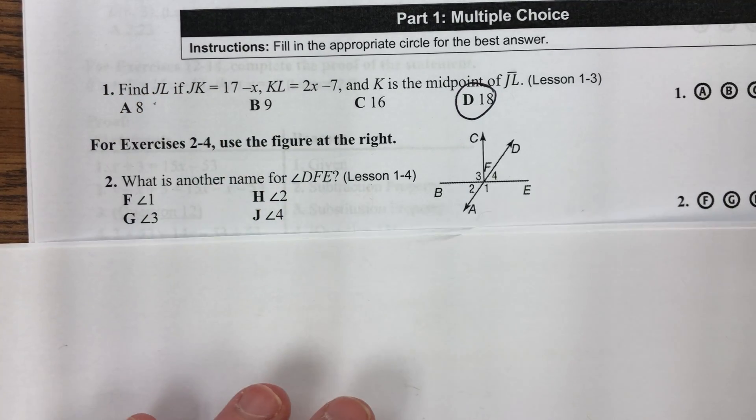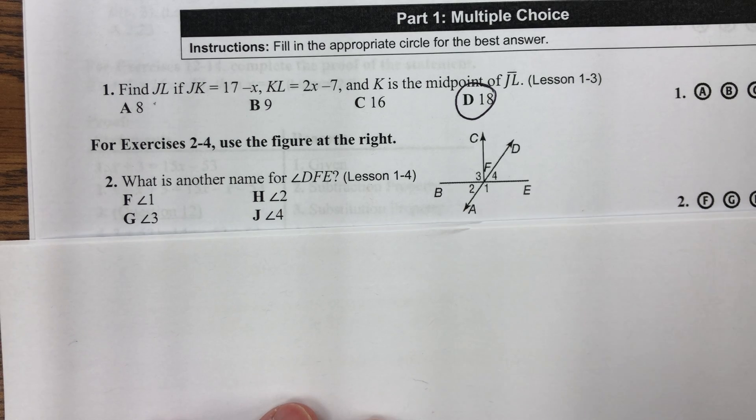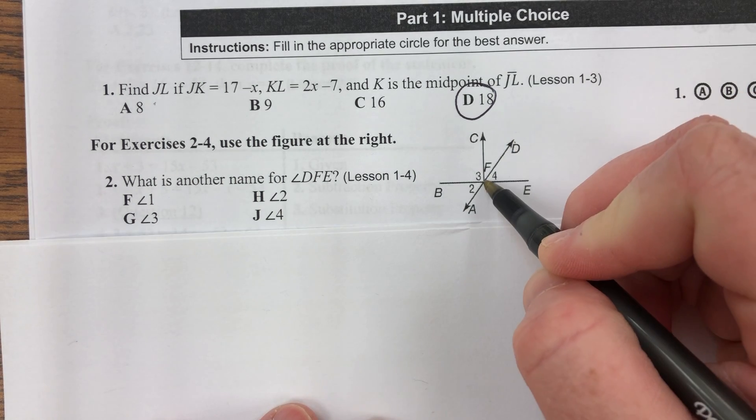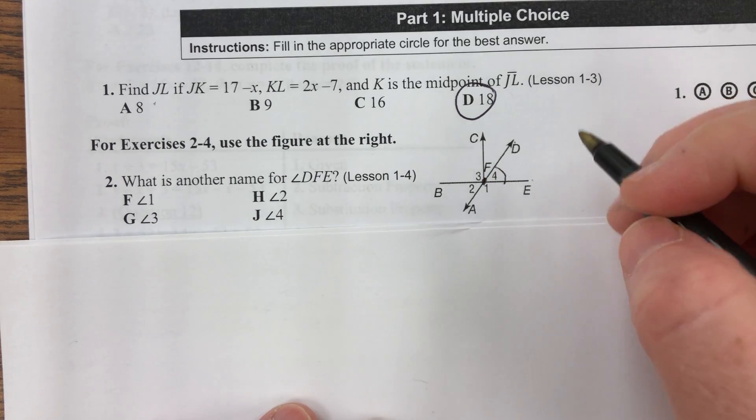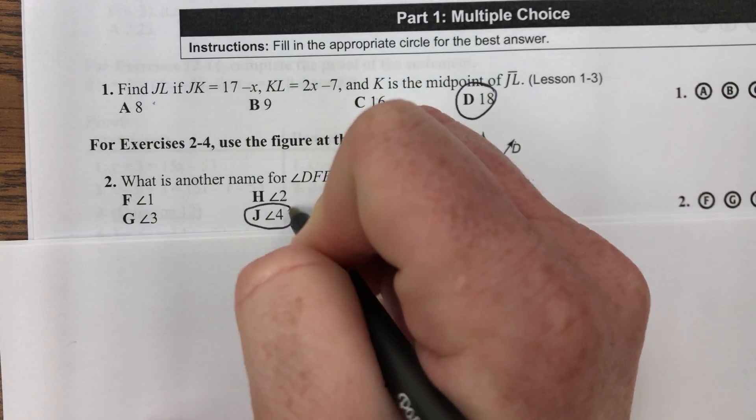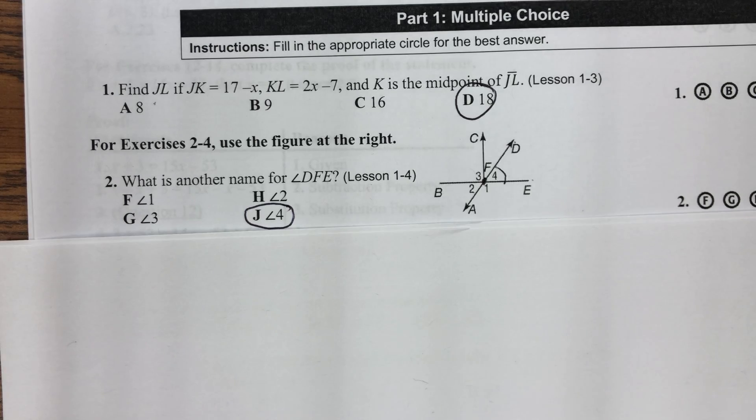Next one. Number two. What's another name for angle DFE? DF is here, but it's this little dot right here. E, that would be angle 4. J, angle 4.